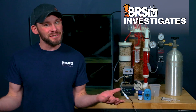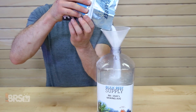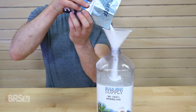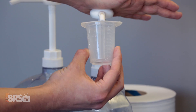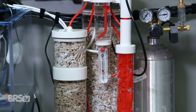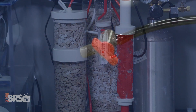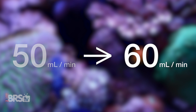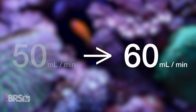The only question after that then becomes: how much do I need to dose? In this case, rather than determine a single amount of liquid to dose your tank each day as you would with Two Part, a calcium reactor dose can simply be measured by the rate of effluent flow coming out of it. For instance, if I'm dosing 50 mils per minute and I needed to increase my dose, I could just turn it up to 60 mils a minute instead.